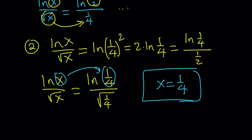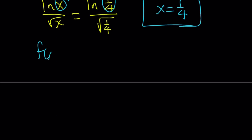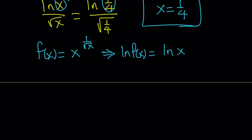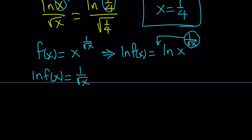We know x equals 1 fourth works, so we have at least one solution. Let's explore a little further. I'm going to define f of x as x to the power 1 over square root of x and differentiate this using a bit of calculus. So let's ln both sides — ln helps because it gets rid of the variable exponent and brings it down. So ln f of x equals 1 over square root of x times ln x, which can be written as ln x over square root of x.